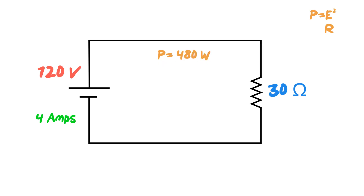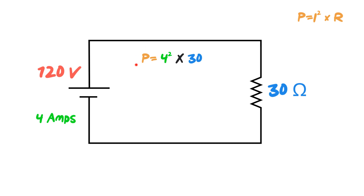We have one more formula to look at: P equals I squared times R, which means we use our current and our resistance. Plugging the numbers in — power equals 4 squared times 30 — power again works out to be 480 watts.